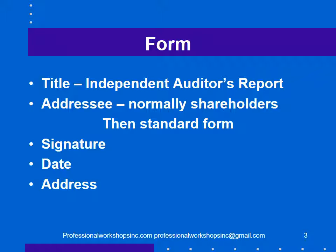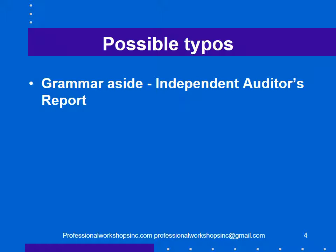The auditor's address is normally just the city and country in which the auditor was located. One thing to watch in the audit report, aside from typos and grammar, is the new rule: it's 'The Independent Auditor's Report' — auditor apostrophe s. Before this section came out, we would write 'auditors apostrophe' if it was a firm of auditors. The standard setters have decided that we all use 'auditor apostrophe s' now, so just make sure that's done correctly in all reports.